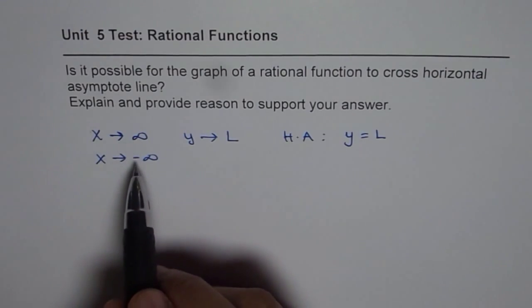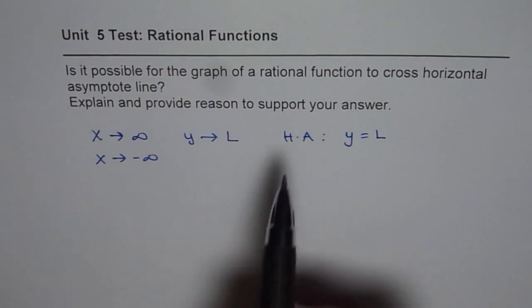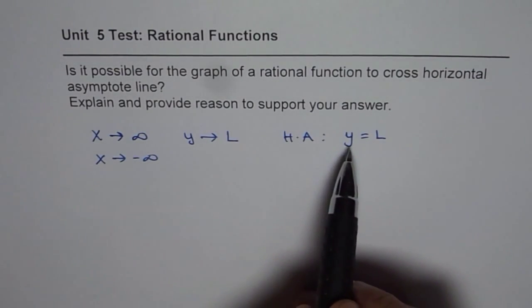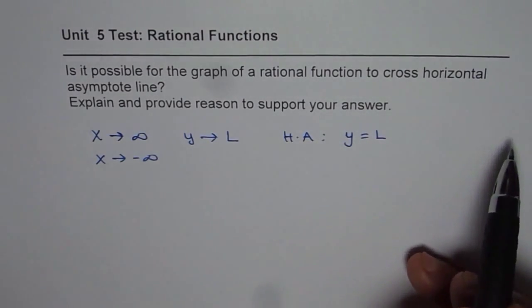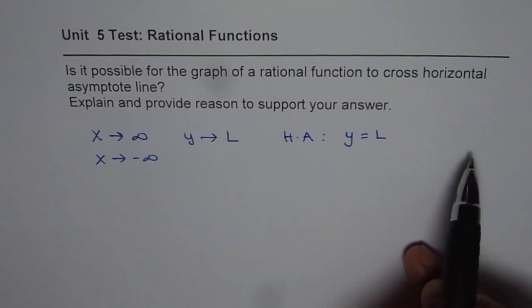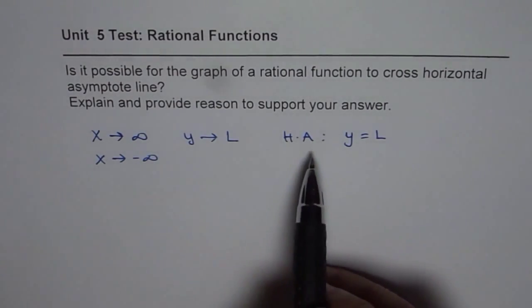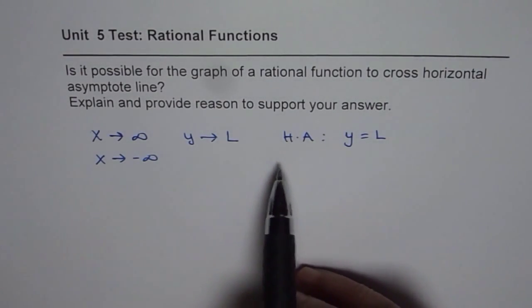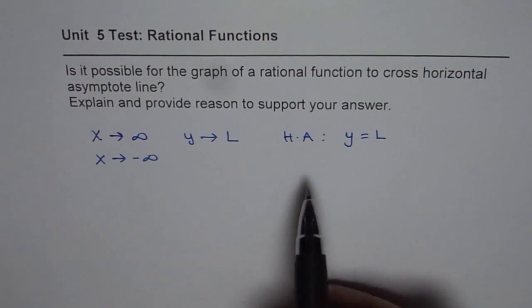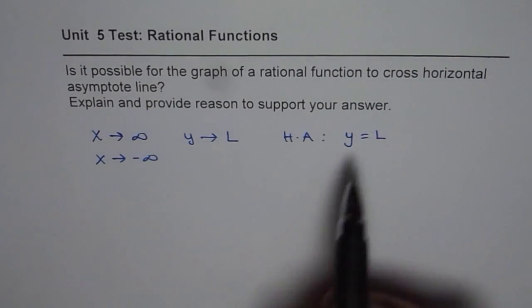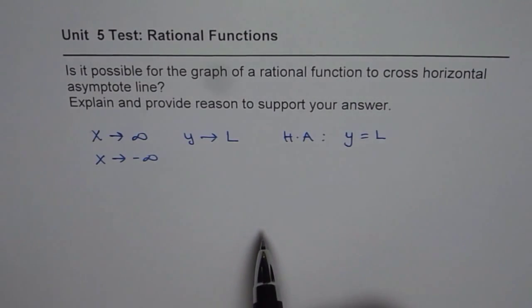Remember, definition of horizontal asymptote says what happens to the graph of the function as the function is approaching positive or negative infinity and behavior. But it is not saying anything about what happens in between. So in between you can always cross y equals to L, the horizontal asymptote line.